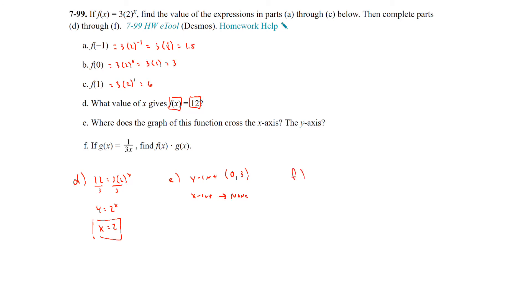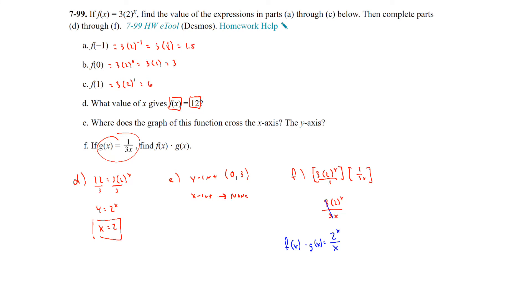For part F, if G(x) = 1/(3x), find F(x) · G(x). F(x) = 3 · 2^x, multiplied by G(x) = 1/(3x). Multiplying as two fractions: (3 · 2^x) / (3x). The 3s cancel, giving 2^x / x. Therefore F(x) · G(x) = 2^x / x. You can't cancel the x's because one is an exponent and the other is just a variable in the denominator.